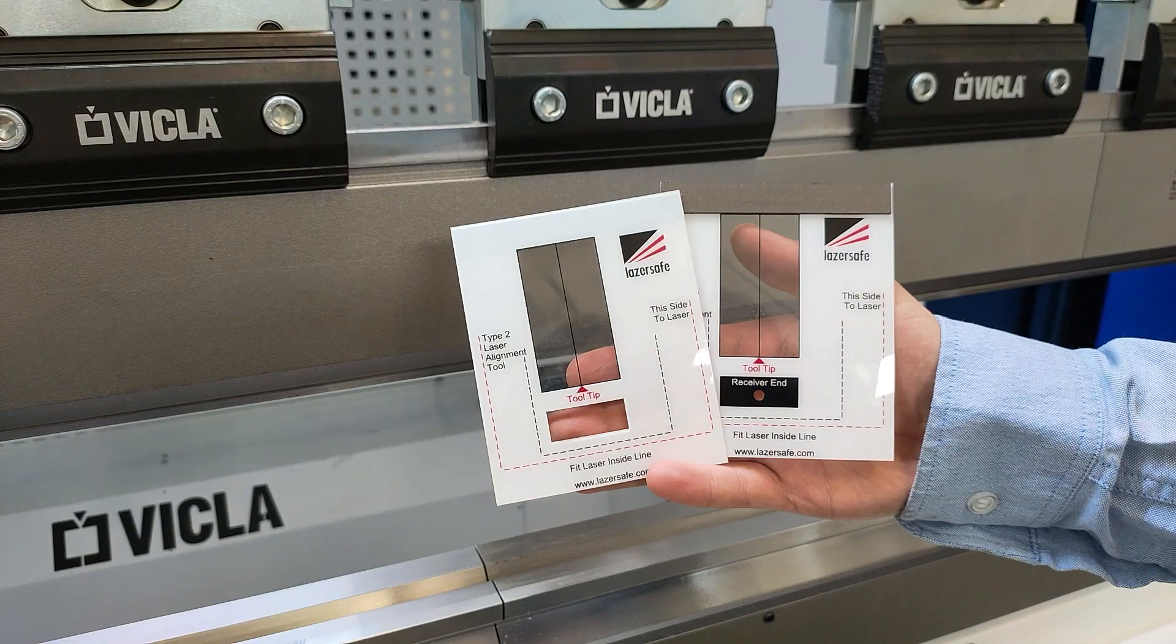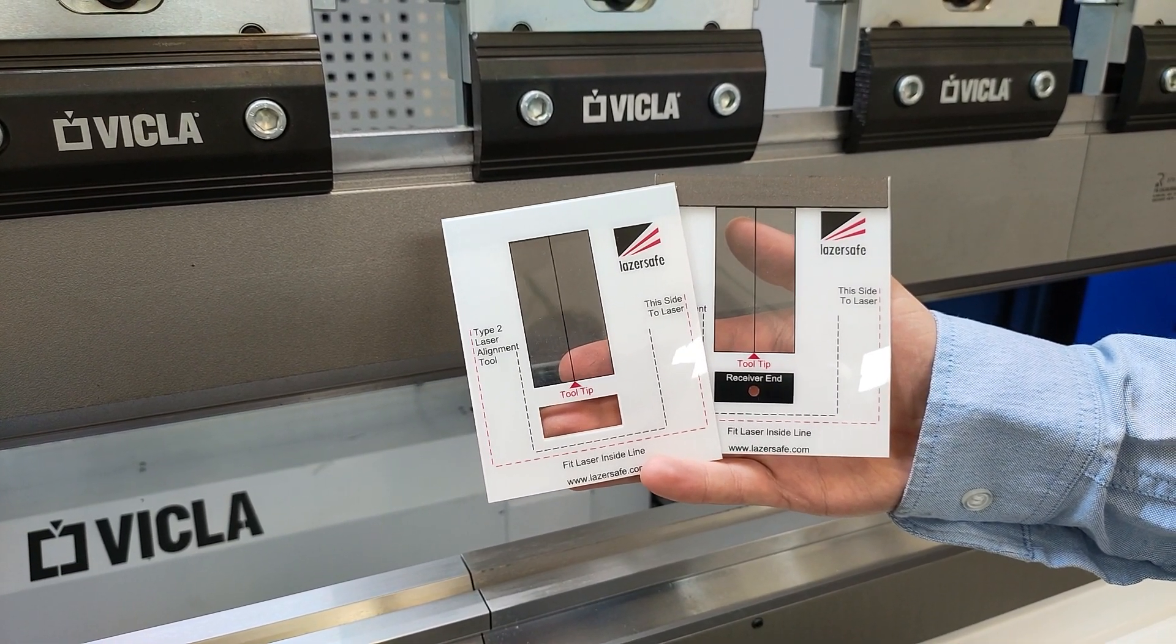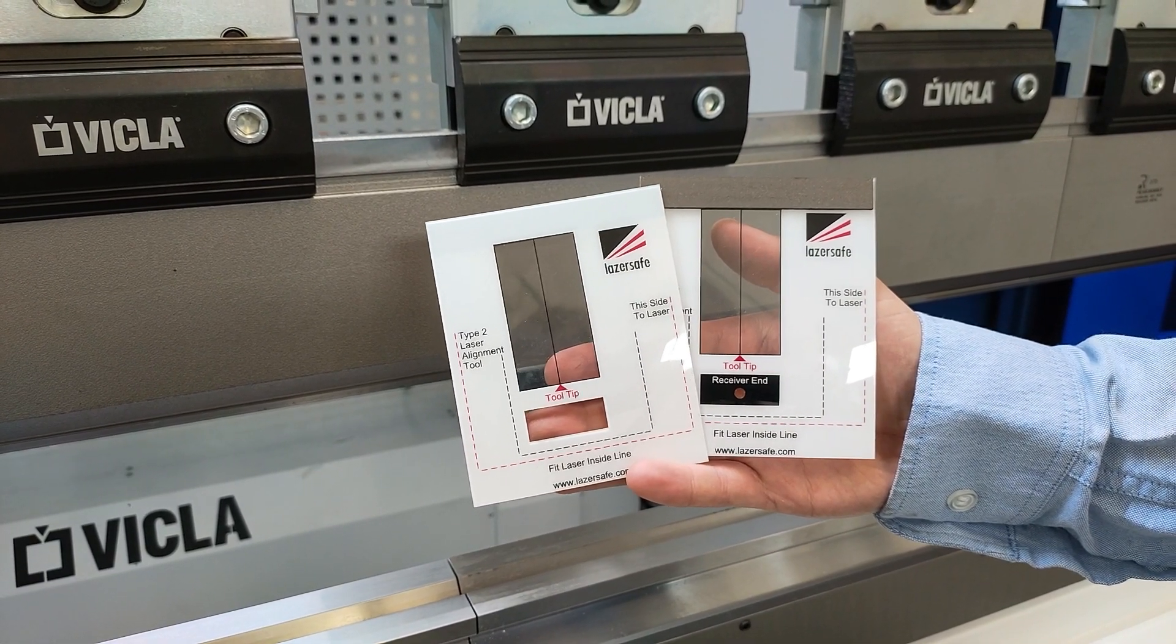To align the photocells, you must use the appropriate align tools. For the laser transmitter, we will use the TX alignment magnet. For the camera receiver, we will use the RX alignment magnet.